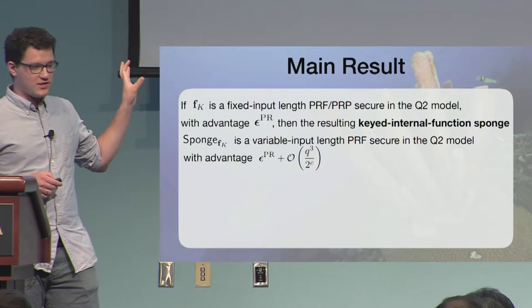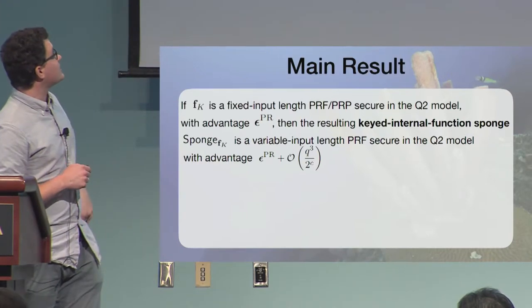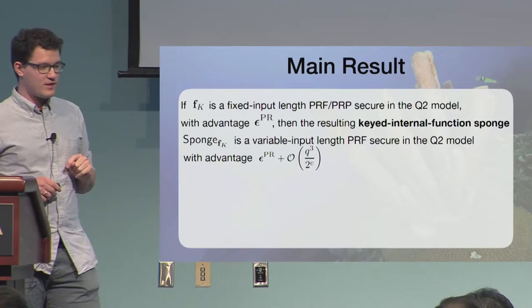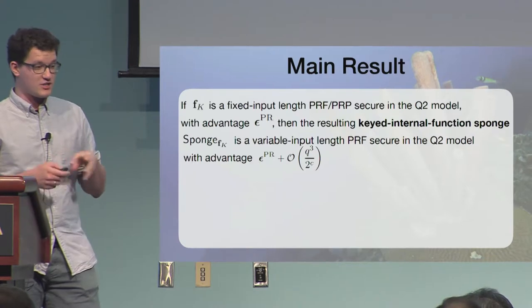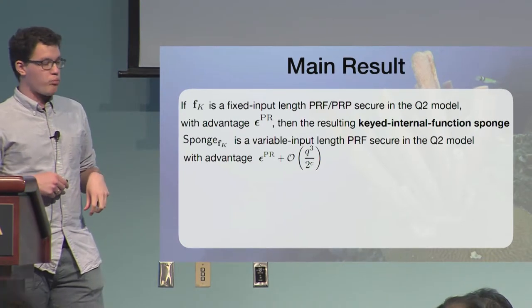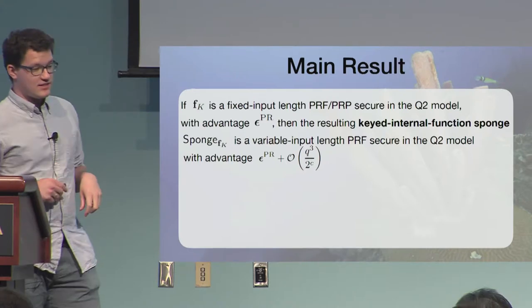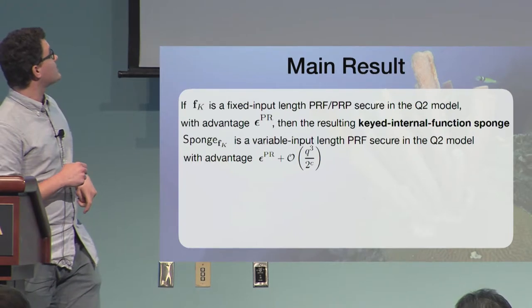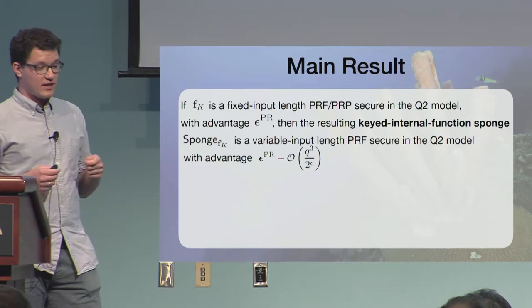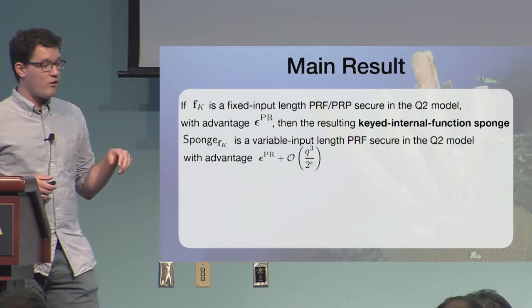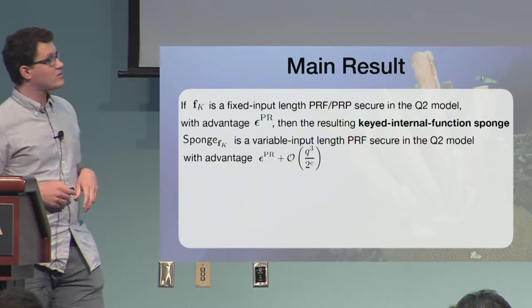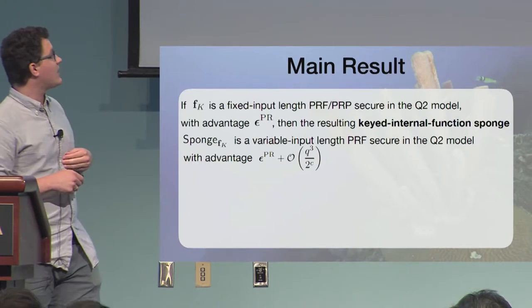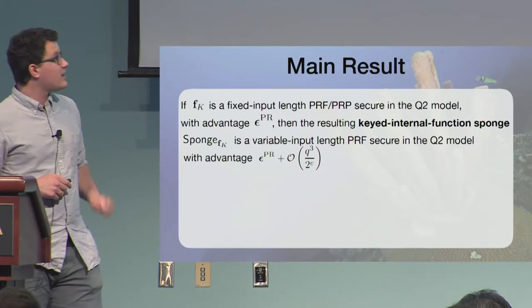So somehow, okay, I will explain this keying business here a bit more. So this is the same theorem as we've seen before with more details. So now I added the details. So F is a fixed input length pseudorandom function or pseudorandom permutation secure in the Q2 model where you give this superposition access to this guy, and the advantage of this is epsilon. And then the resulting keyed internal function sponge, this guy, is a variable input length random function secure in the same model, with advantage epsilon plus Q to the power of 3 over 2 to C. And the C we call the capacity.